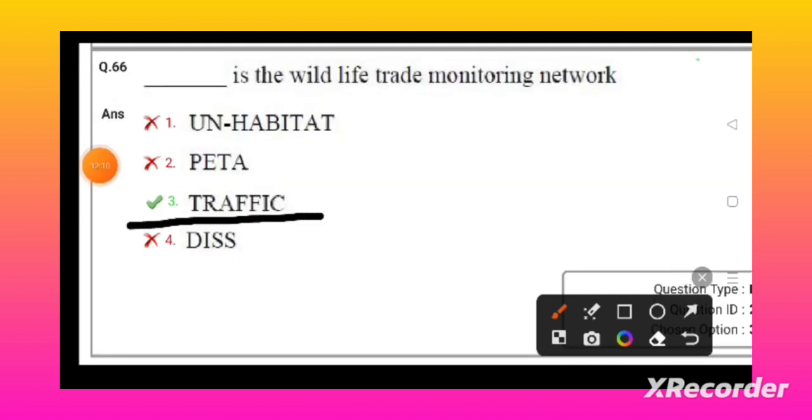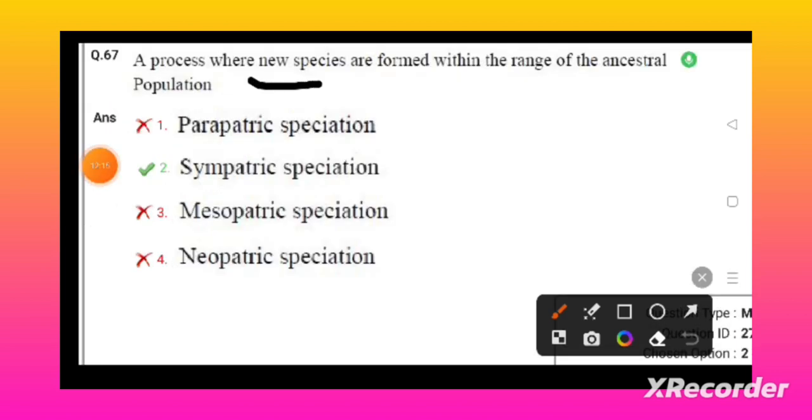A process where the new species is formed within the range of ancestor population is known as sympatric speciation.